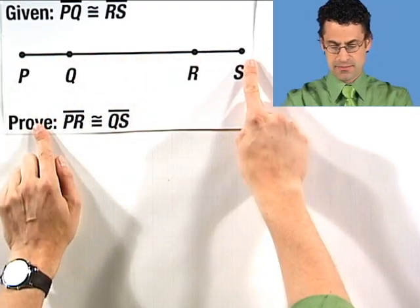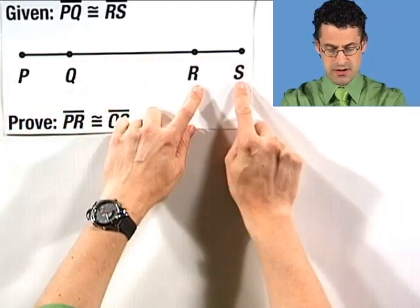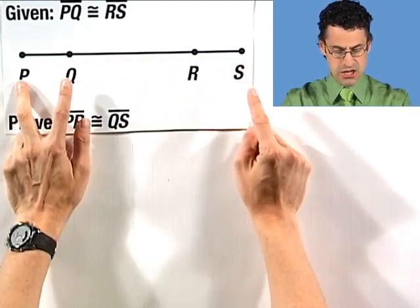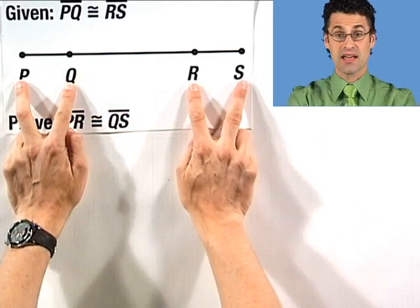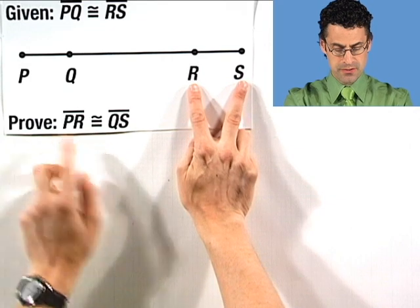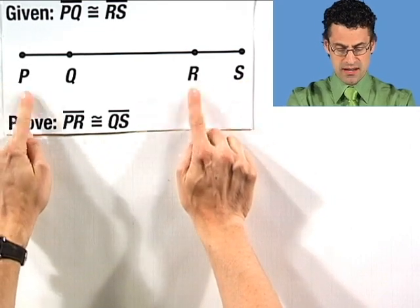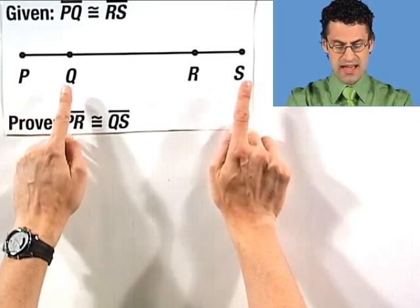So here's the result that we're going to take a look at. We're given this line segment here, and you can see these marks P, Q, R, and S. We see that PQ, that line segment, is congruent to RS. And we're asked to prove that PR is congruent to QS.